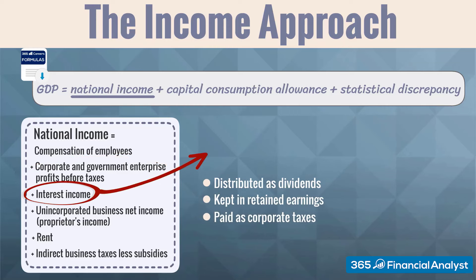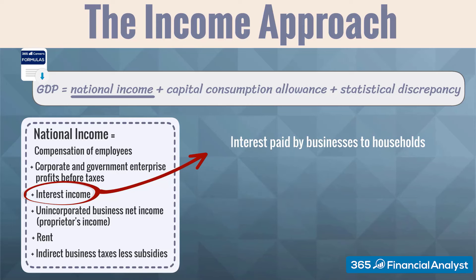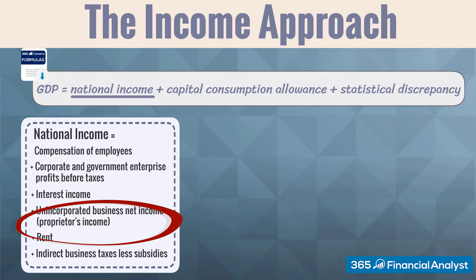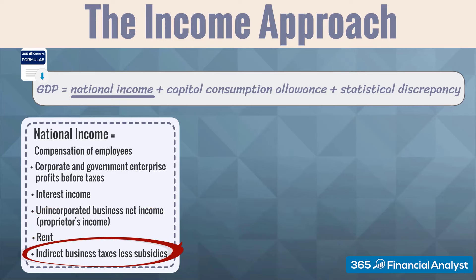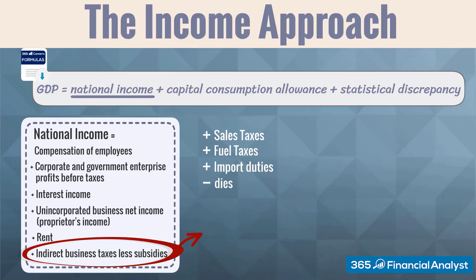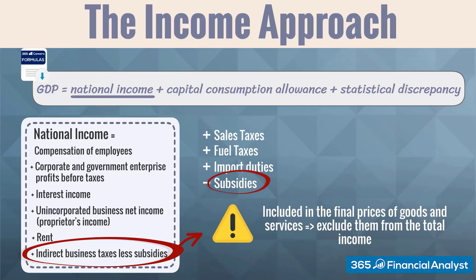Next, we have interest income. This is the interest that businesses pay to households to compensate them for the loans of financial assets. Unincorporated business owners' net income and rent are the earnings that go to sole proprietors and partnership companies. Lastly, we need to add indirect business taxes, such as sales taxes, fuel taxes, or import duties, and subtract subsidies. Subsidies are included in the final prices of goods and services, and that is why we need to exclude them from the total income here.